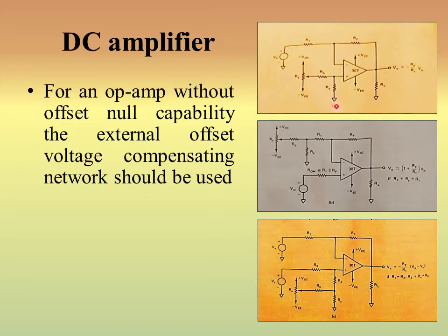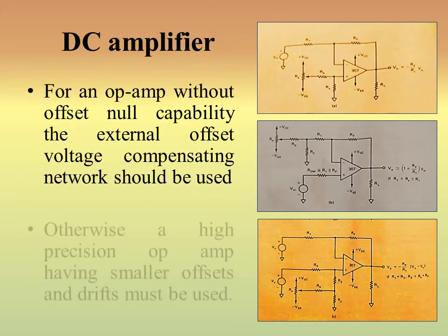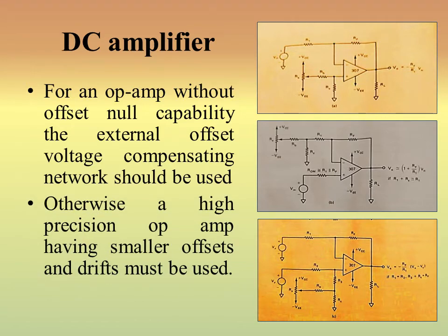This external circuitry is provided to reduce the output offset voltage to zero. If you do not wish to add this extra circuitry, you must use a very high-precision, low-offset op-amp. Otherwise, a high-precision op-amp having smaller offsets and drifts must be used. This is basically how the operational amplifier is used as a DC amplifier.